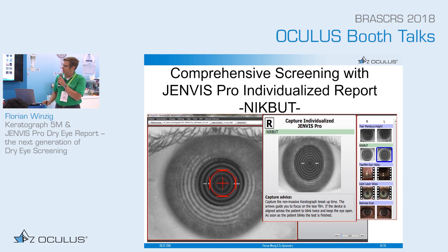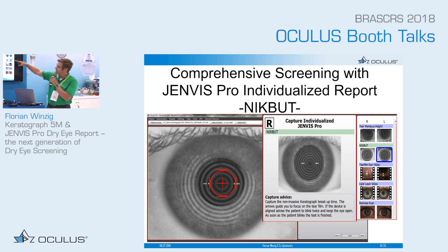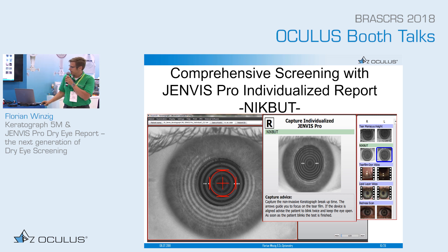The technician just aligns the device to the patient's eye, advises them to blink twice, and then the software automatically starts the NIBUT measurement. A new feature is that the software automatically guides you to the next measurement. For example, you begin with tear meniscus height on the right side, then move to the left. For NIBUT you stay on the left side first, then do the tear film dynamic and lipid layer on the left side, before moving to NIBUT on the right. This minimizes unnecessary movement of the device.